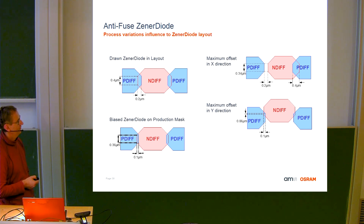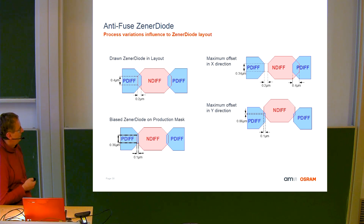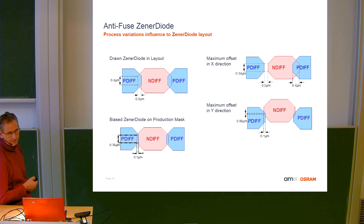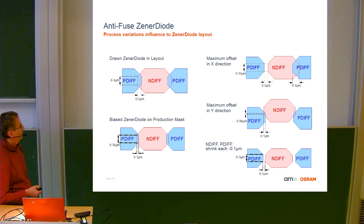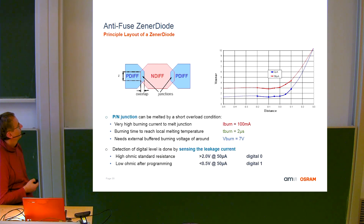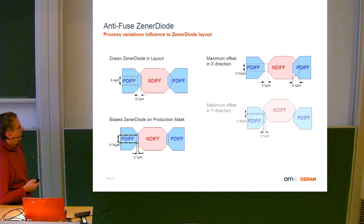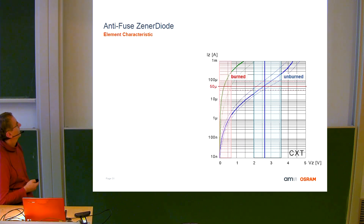Even with a process shrink you would still have 0.1 µm overlap, and it has been shown that even below 0.1 µm the element can still be programmed. Looking at the Zener diode characteristics on a logarithmic current scale: in forward bias the current increases, and at around 0.3–0.4 V you have enough current to reach milliamps. Once programming starts, the junction melts down, the resistor lowers, the current rises, and within 2–3 microseconds from external you can apply energy and destroy the junction.